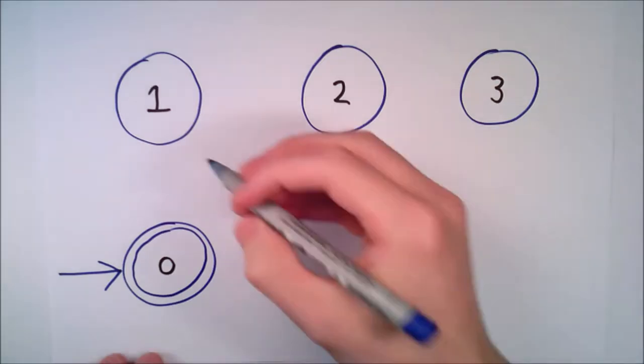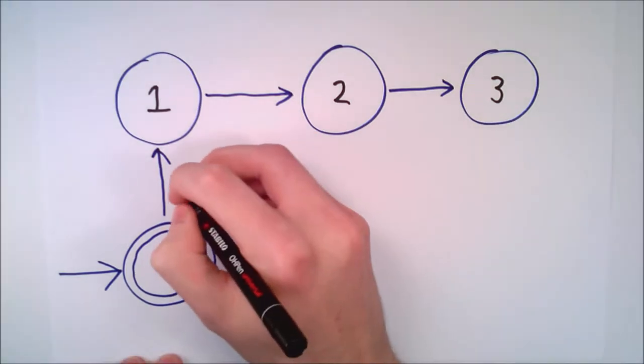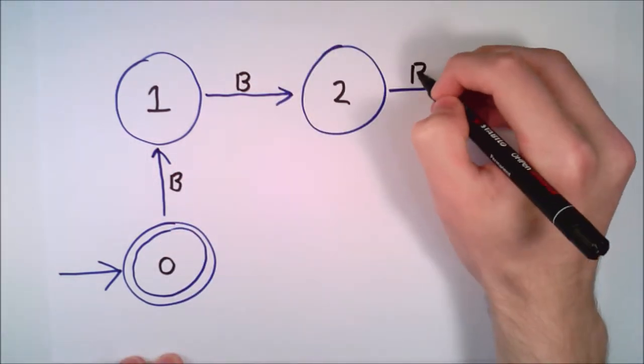We can connect them with B transitions. Each transition represents an increment of the number of Bs in a row by one.